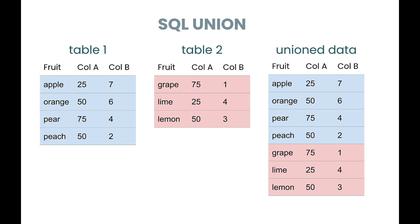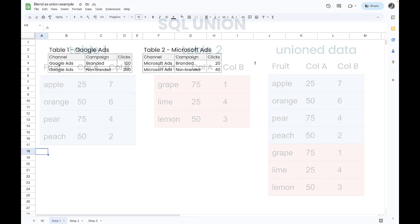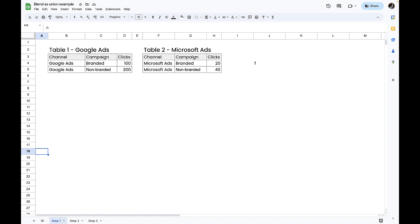The technique I'm going to show you is how to effectively do a UNION in Looker Studio by creating a blend using a full outer join condition. Before we go to Looker Studio, let's have a look at what we're going to do in a Google Sheet.